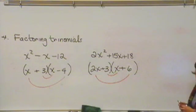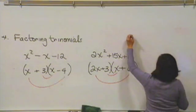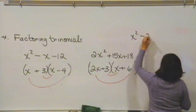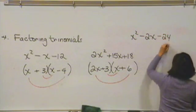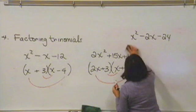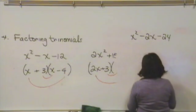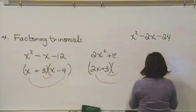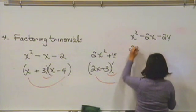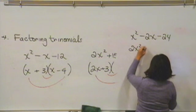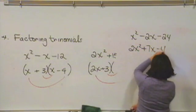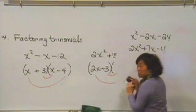So here, why don't you see if you can factor these two. See if you can factor x squared minus 2x minus 24. And then see if you can factor 2x squared plus 7x minus 4. Okay, press pause and give that a try.